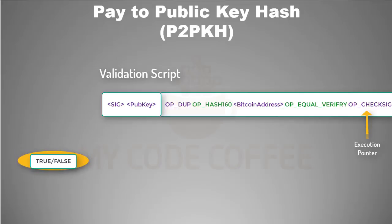We have already discussed how digital signature verification happens in a previous chapter. In this way, the unlocking script is used to unlock the locking script. If the result is true, then the unlocking was successful and the fund can be spent. This is how the Pay to Public Key Hash script works. As you can see, in this script there was only one signer, so the unlocking script had only one digital signature and one public key — making this a single signature script.